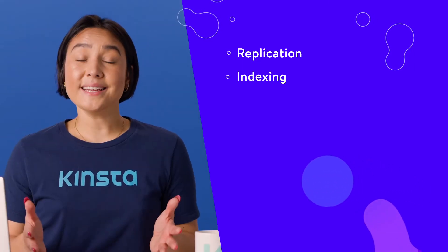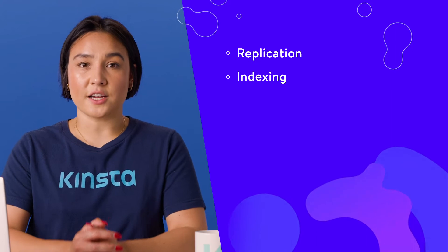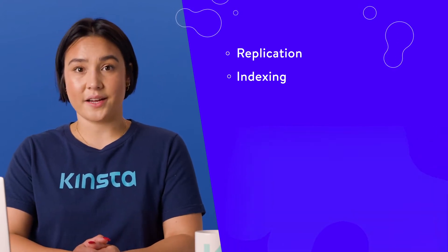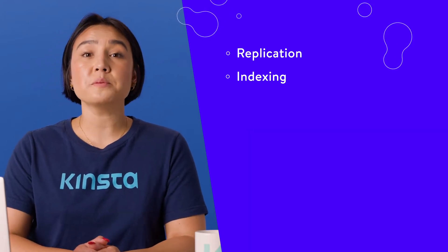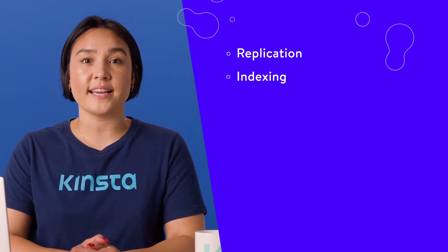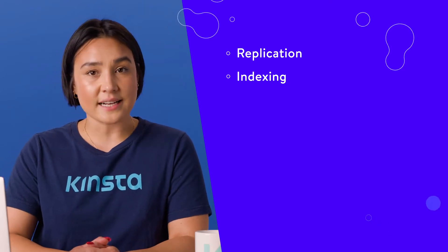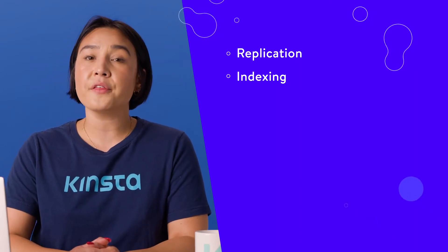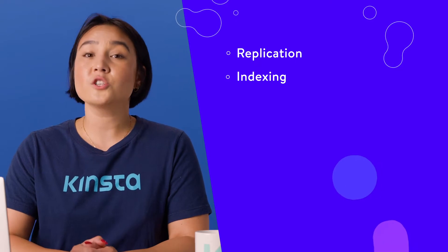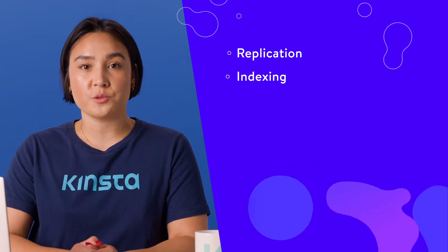Indexing: You can index fields in MongoDB documents as primary or secondary. This helps improve search performance in the database and lets you perform the search on indexes rather than the entire document, which automatically helps increase search speed.